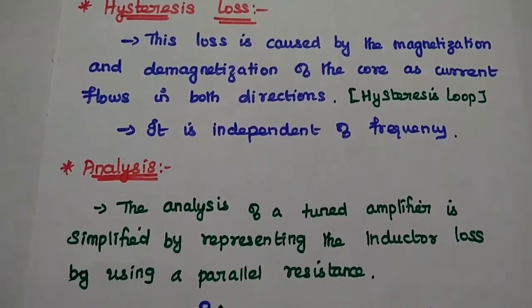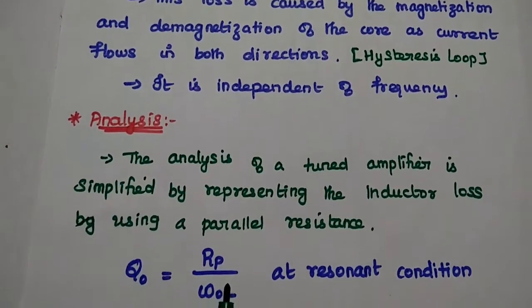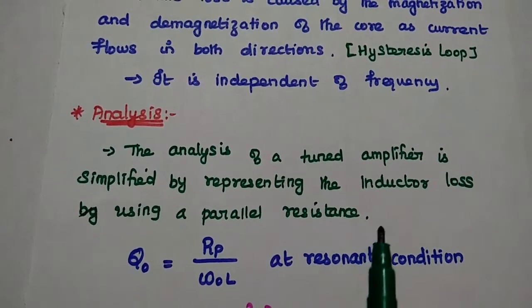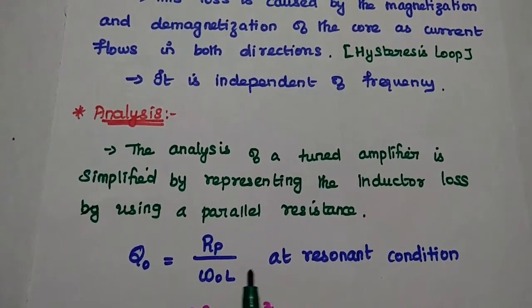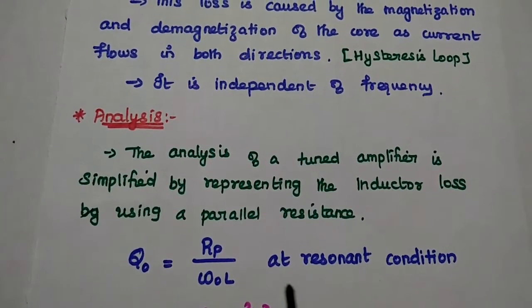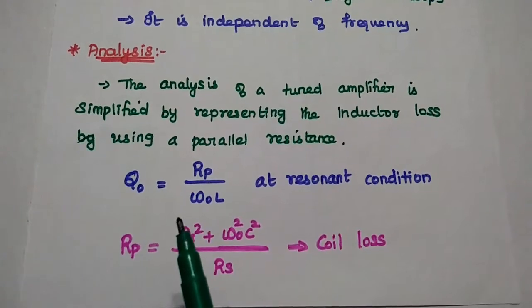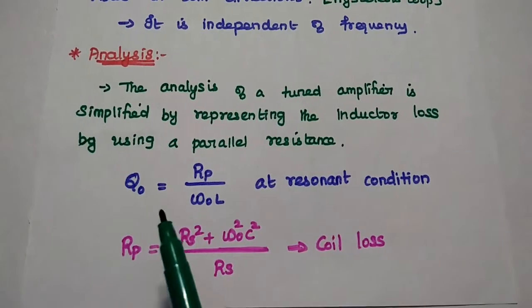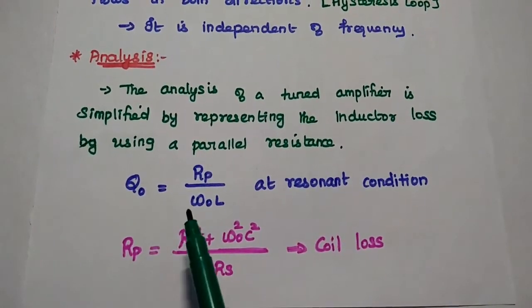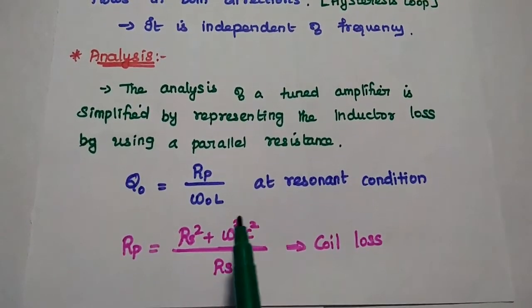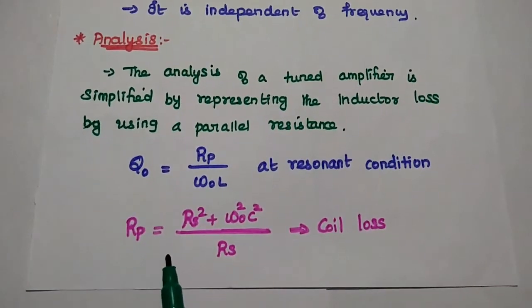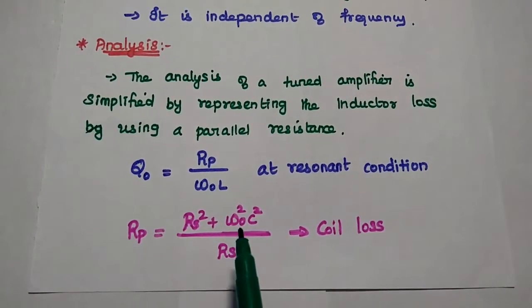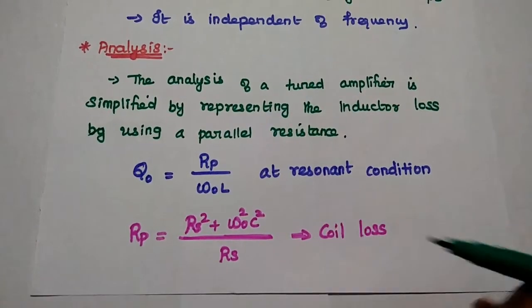So next, analysis of the coil losses. The analysis of the tuned amplifier is simplified by representing the inductor loss using a parallel resistance. So here we have to consider the quality factor Q naught, where this naught represents resonant condition. So Q naught is equal to Rp by omega naught into L. From this we can get the value of this coil loss Rp is equal to Rs squared plus omega naught squared C squared by Rs.